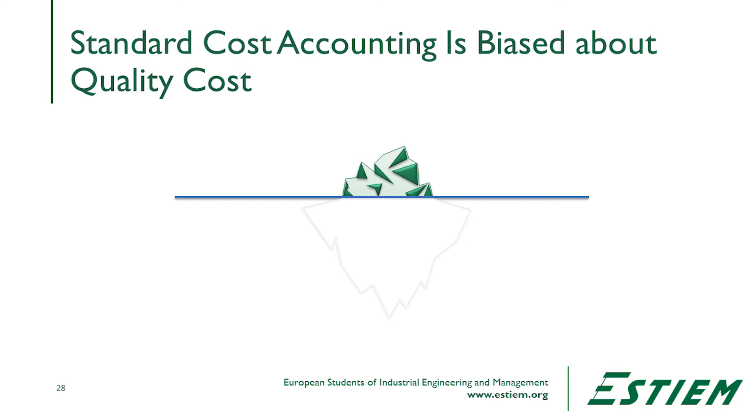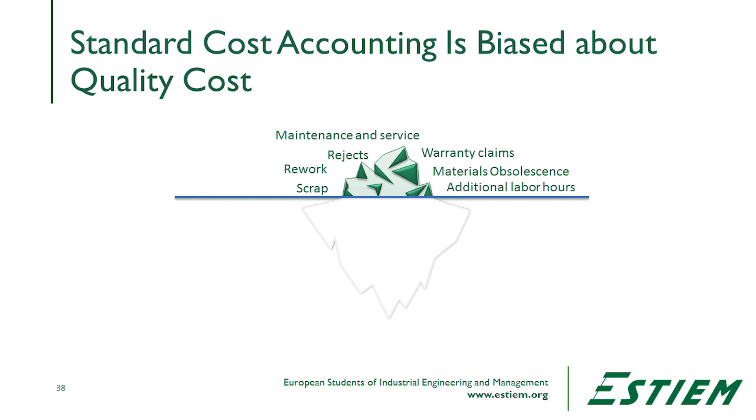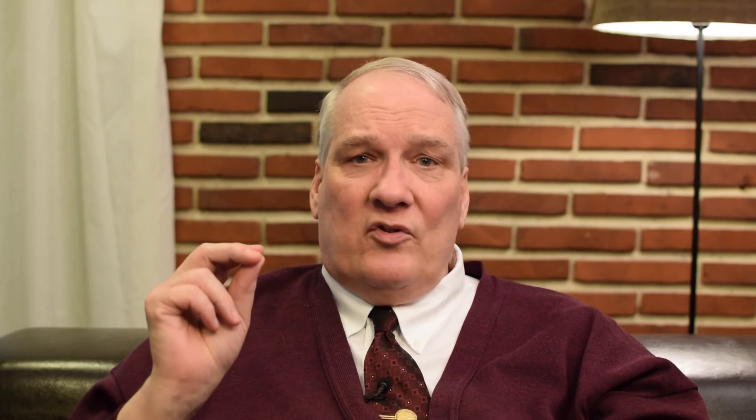To measure the cost of quality, we have to understand it in much better detail. Standard cost accounting suffers from bookkeeping problems — it doesn't tell us the full cost of everything in the process. It will give us scrap, rework, rejects, maintenance, warranty claims, materials obsolescence, and additional labor hours. But the codes don't immediately tell you what's exactly happening. Were additional labor hours due to sorting, or increased production? Were all warranty claims genuine, or was sales building goodwill with a hidden discount?